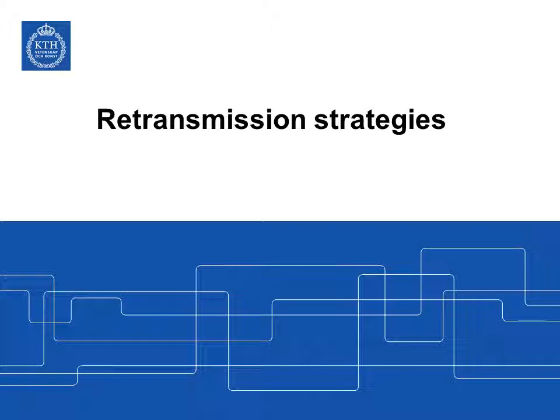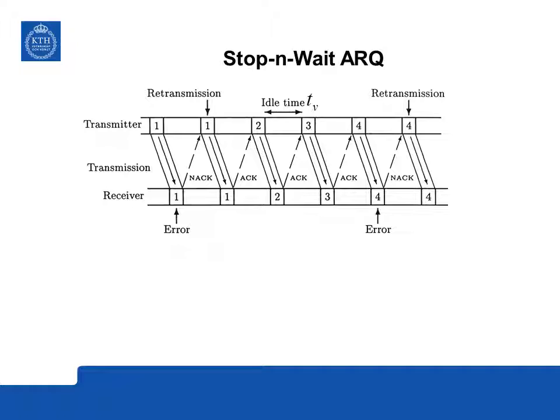The next topic is how retransmissions are arranged in practice. The simplest procedure is the stop-and-wait ARQ protocol, which transmits one packet at a time and keeps retransmitting until it is correctly received. In the timing diagram, the transmitter sends message 1; if the receiver detects an error, a negative acknowledgement is sent back and message 1 is retransmitted. If correctly received, an acknowledgement is sent and the transmitter proceeds with message 2.